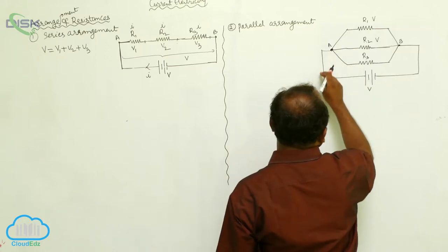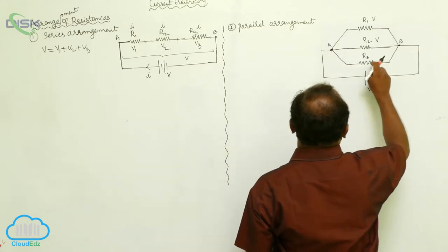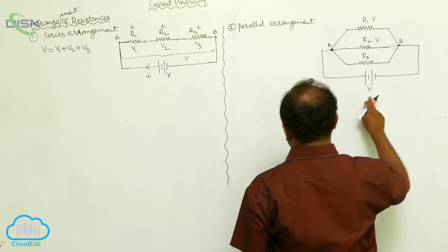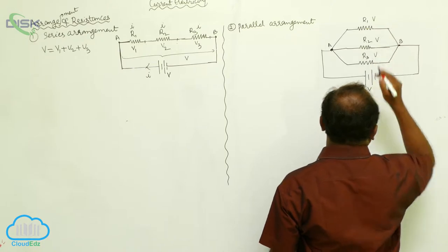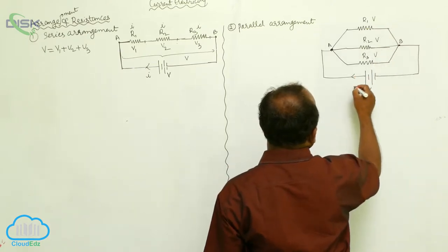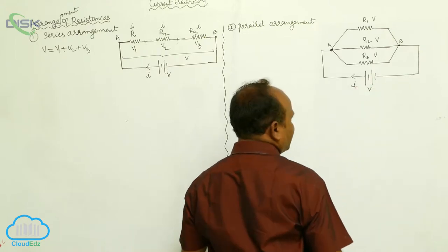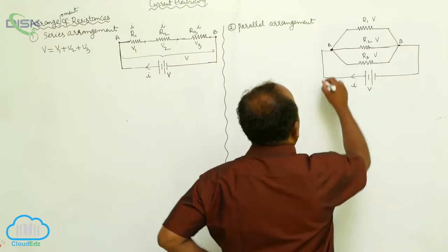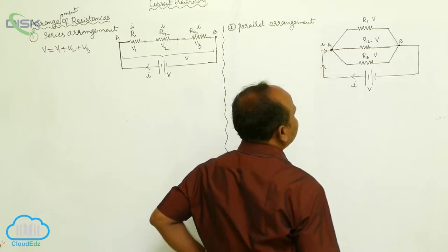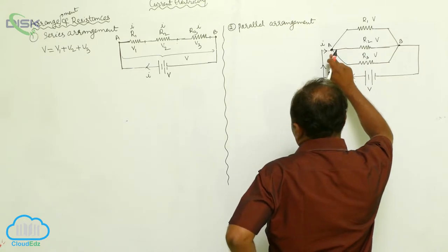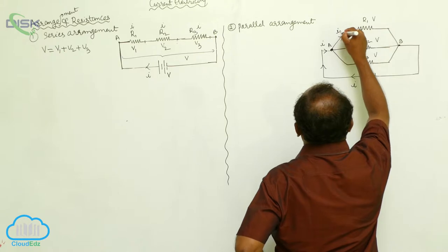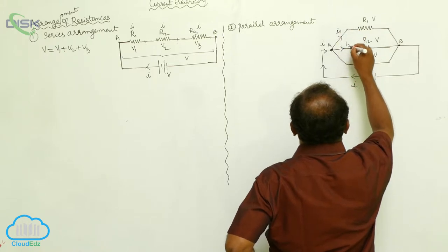The first terminal is connected to the positive terminal, and the second terminal is simultaneously connected to the negative terminal, whatever the potential difference, which is the same across the third resistance. Here, the current is going to be divided at a junction where the current divides into three parts: I1, I2, and I3.